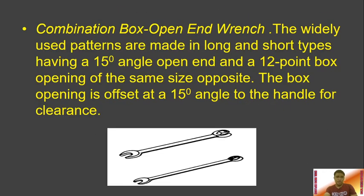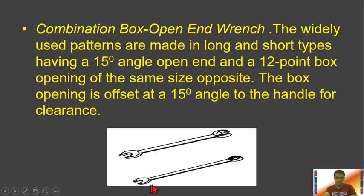Then we have the combination box and open-end wrench. These are widely used patterns made in long and short types, having a 15-degree angle open-end and a 12-point box opening of the same size on the opposite side. The only difference is one side is open-end and the other side is a box-end. The box opening is offset at 15 degrees to the handle for clearance.